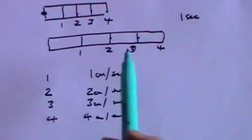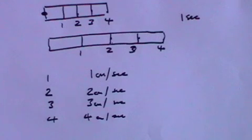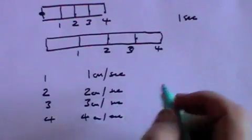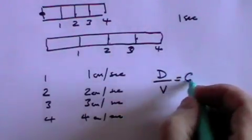And so you can see that the further away the point is, the faster it's traveling. We can also see something else about that, and that is that the distance now divided by the velocity is a constant.